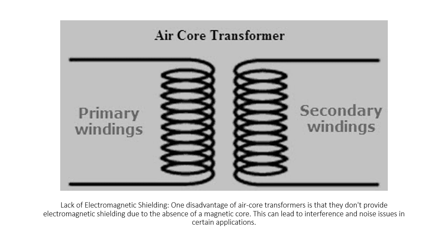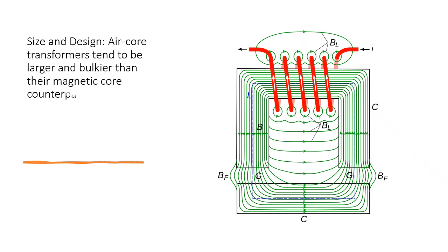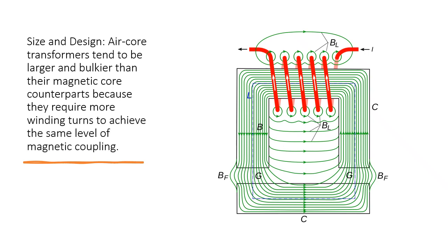Size and design, air core transformers tend to be larger and bulkier than their magnetic core counterparts because they require more winding turns to achieve the same level of magnetic coupling.